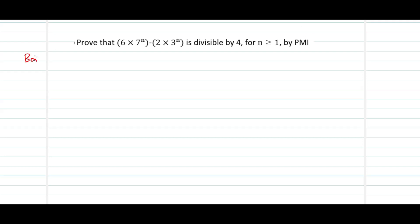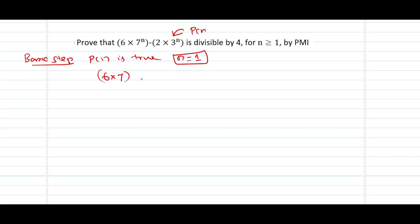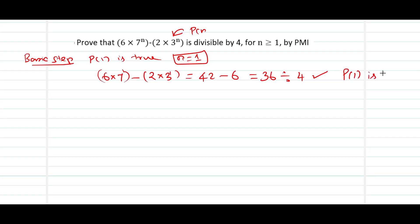The basic step is to prove that p of 1 is true — that is, in the given statement p of n, we replace n with 1. When I replace n with 1, I have 6 into 7 power 1 minus 2 into 3 power 1. That gives 42 minus 6, which equals 36. Is 36 divisible by 4? Yes, the statement is true for p of 1. So I have proved that p of 1 is true.